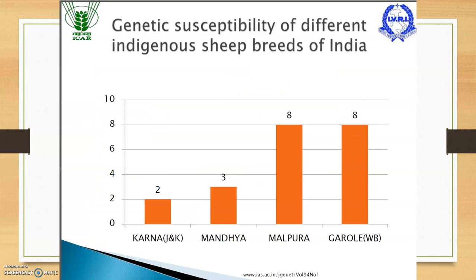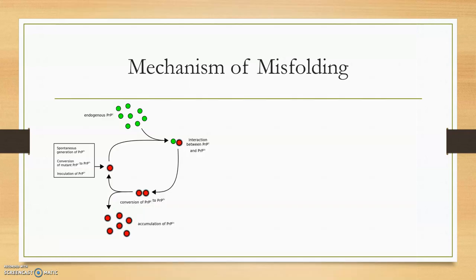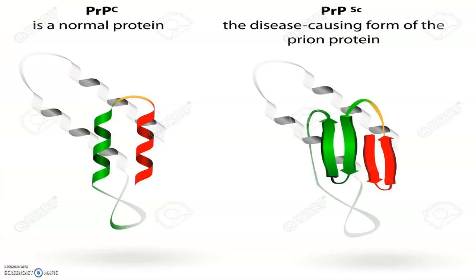The genetic susceptibility of different indigenous sheep breeds of India to scrapie — such as the Malpura and Garol breeds in West Bengal — is higher, meaning their infection risk is greater. The mechanism of misfolding involves an endogenous normal protein being converted into a misfolded protein.